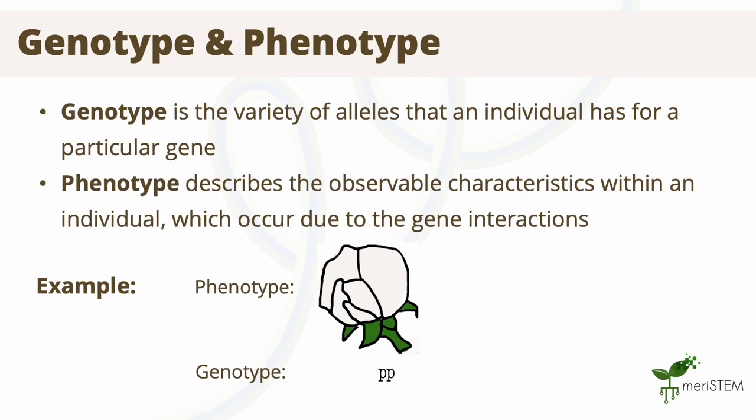When referring to a gene, we often refer to its genotype and phenotype. The genotype refers to the genetic makeup responsible for determining the observable characteristics. The phenotype, however, is the observable or physical characteristics. For example, if we look at the bottom flower, it has the phenotype of the color white, which is expressed by the genotype of two lowercase p's.